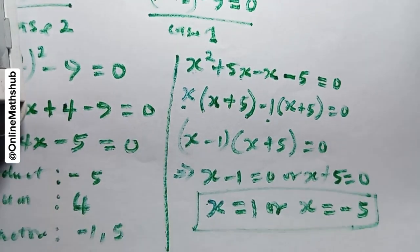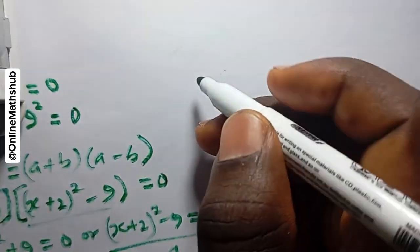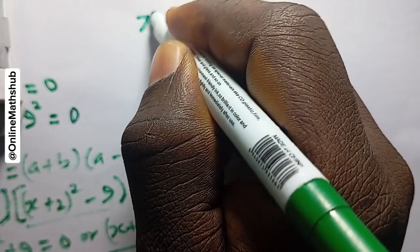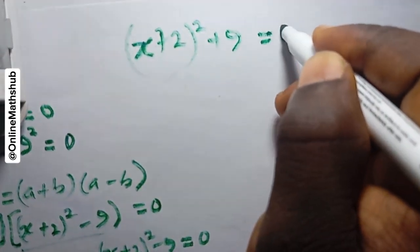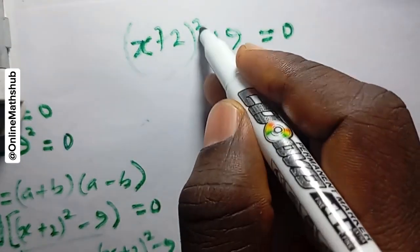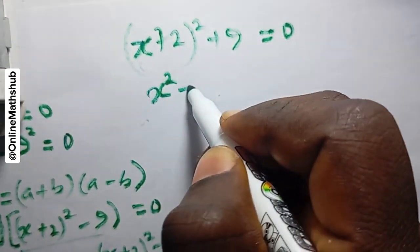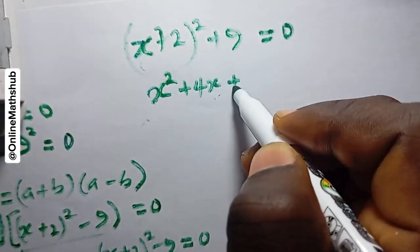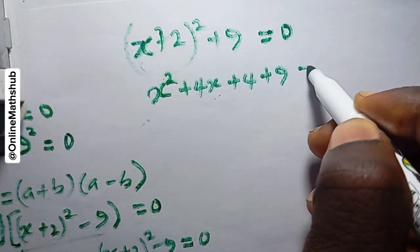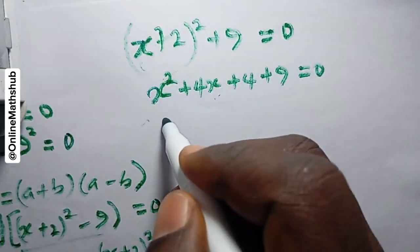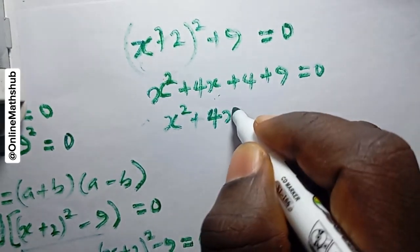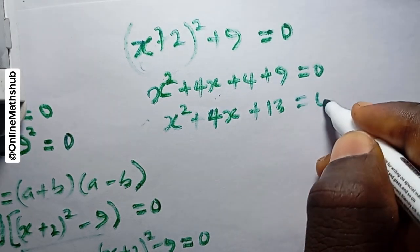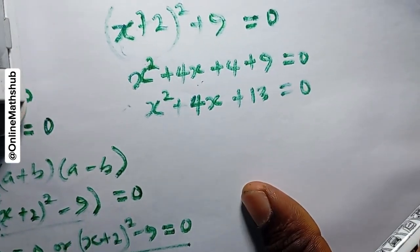Moving on to Case 2: (x + 2)² + 9 = 0. Expanding gives x² + 4x + 4 + 9 = 0, which simplifies to x² + 4x + 13 = 0.